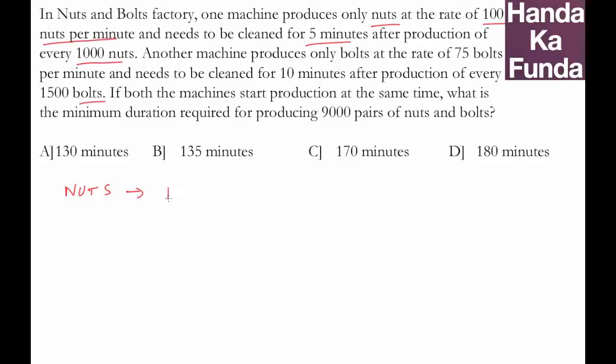So that 1000 nut batch, how much time will it take? It will take 10 minutes to produce at the rate of 100 nuts per minute, plus it will require 5 minutes of cleaning time, which essentially means one batch of 1000 nuts takes 15 minutes.